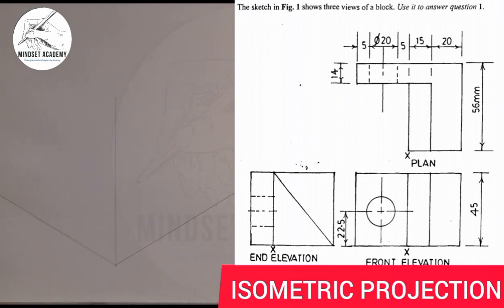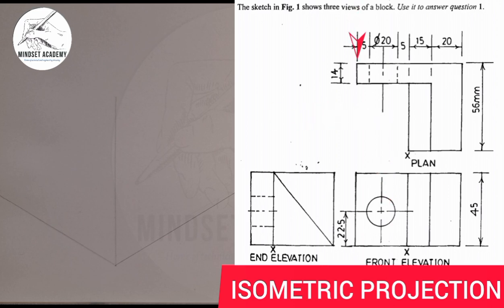The next thing is to get the entire length. You can get the length from the elevation and also from the plan — from one end to the other end. When you add all the values: 5 plus 20 is 25, plus 5 is 30, plus 15 is 45, giving a total of 65.